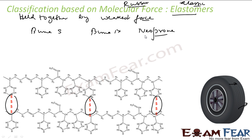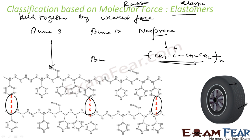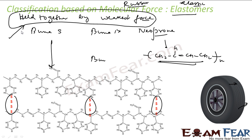Neoprene is made from isoprene. The structure is CH2=CH-C(CH3)=CH2, i.e., isoprene, from which you make neoprene. It can have cis and trans forms, which will have different properties based on the different kinds of bonds and intermolecular forces involved. The most important point to take from this section: elastomers are held together by the weakest force of attraction, and that is why they are elastic.